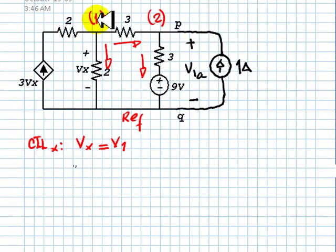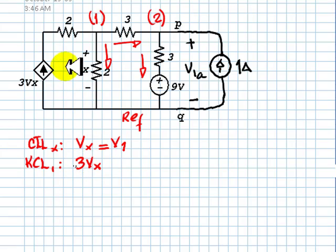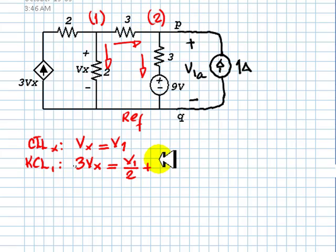We have two KCL equations, for nodes 1 and 2. KCL for node 1: the currents going out are 3VX, plus V1 over 2, plus V1 minus V2 over 3.